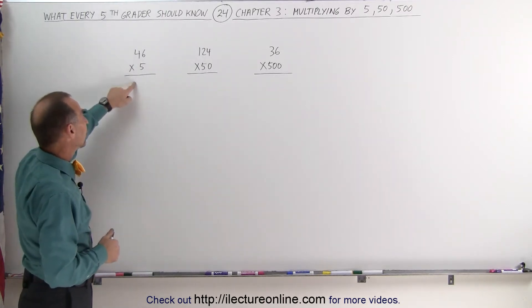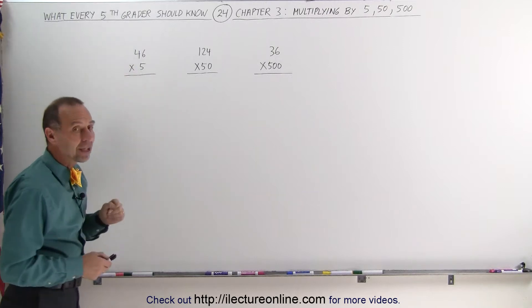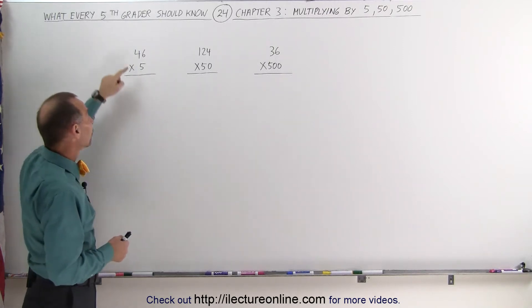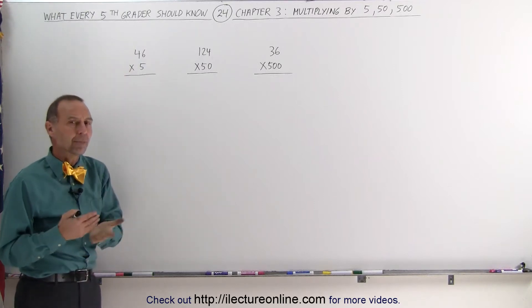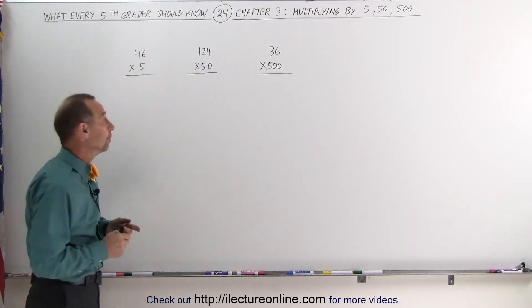When we multiply times 5, you can first divide the number by 2 and then multiply times 10. Multiplying times 10 is like adding a 0 to the number.